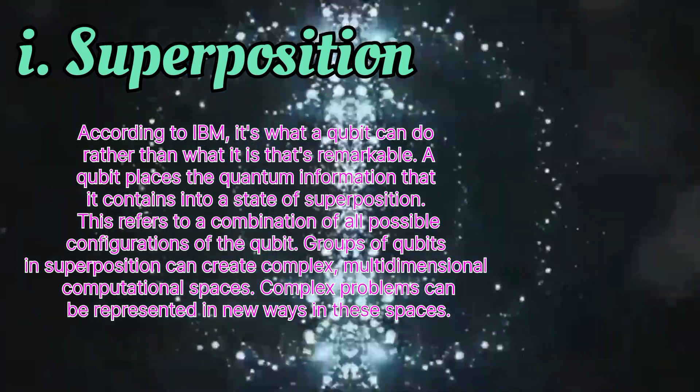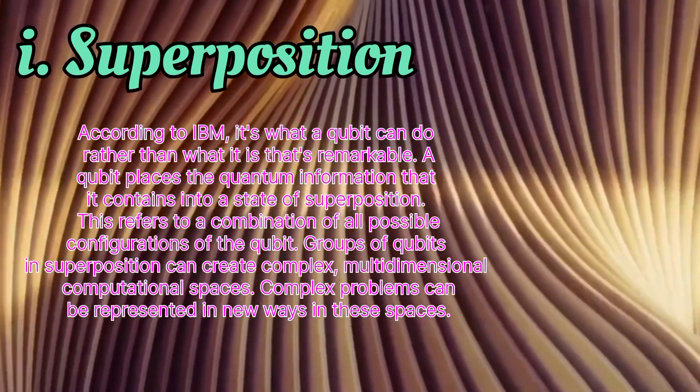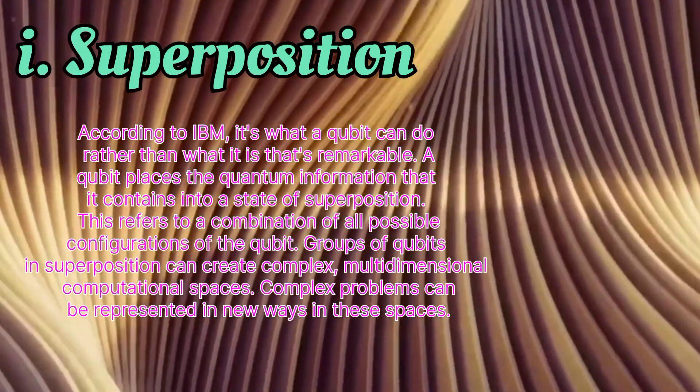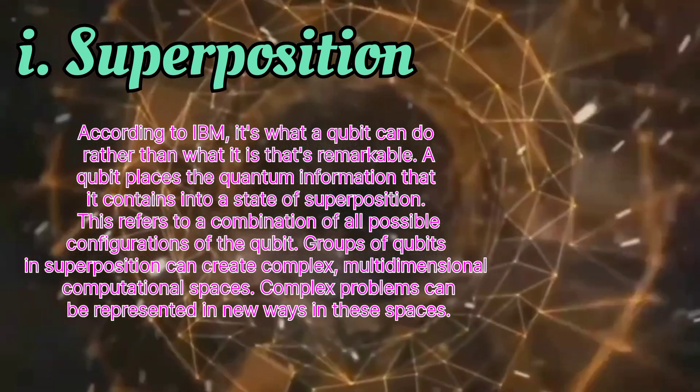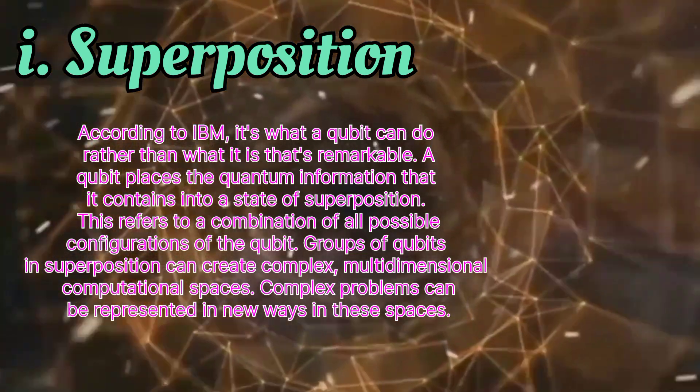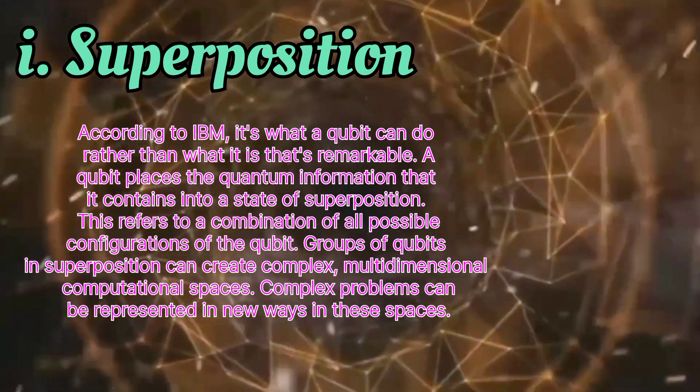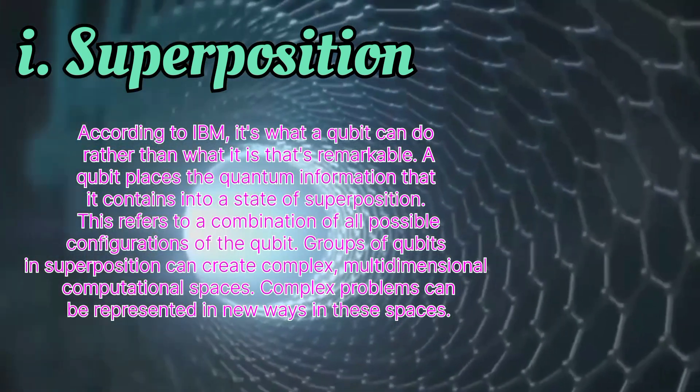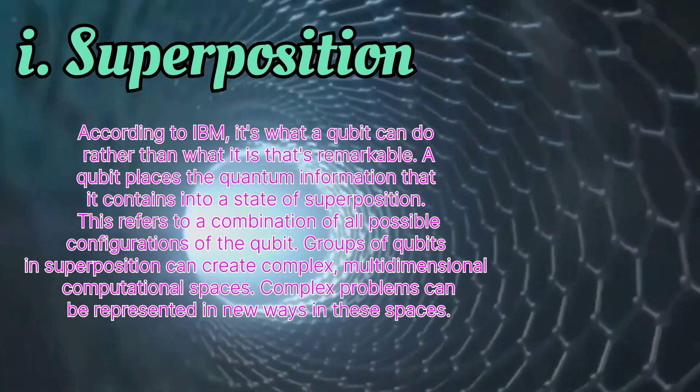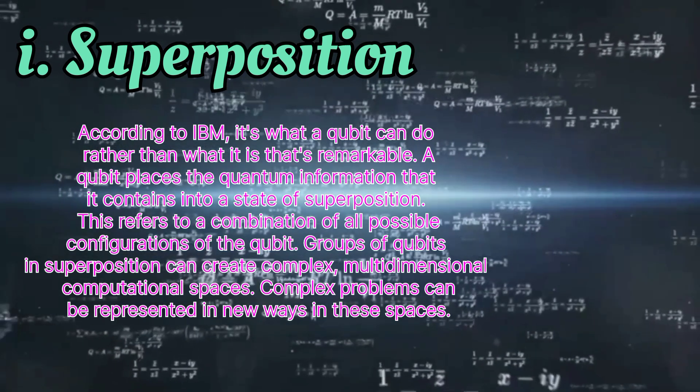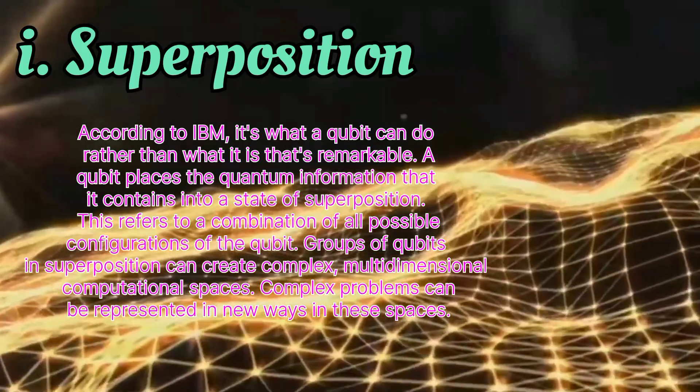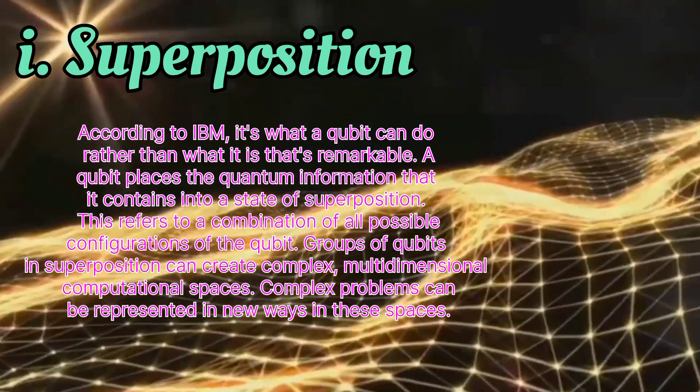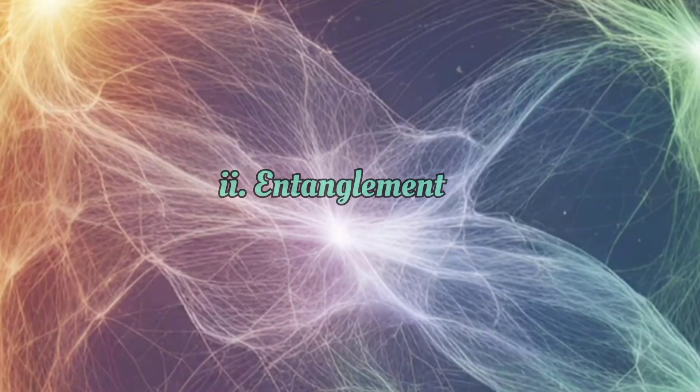Superposition: According to IBM, it's what a qubit can do rather than what it is that's remarkable. A qubit places the quantum information it contains into a state of superposition. This refers to a combination of all possible configurations of a qubit. Groups of qubits in superposition can create complex multidimensional computational spaces. Complex problems can be represented in new ways in these spaces.